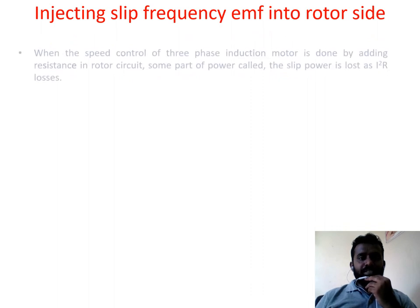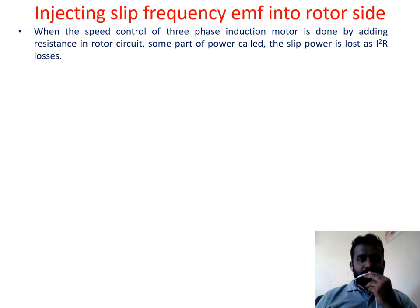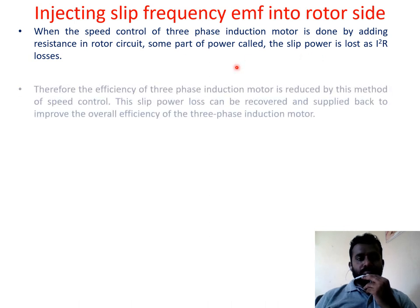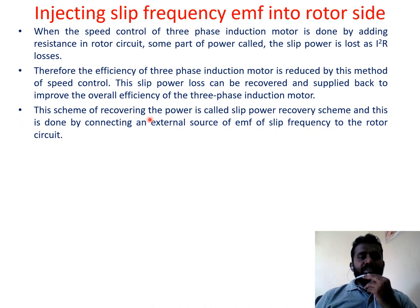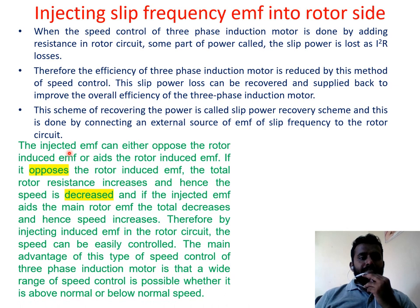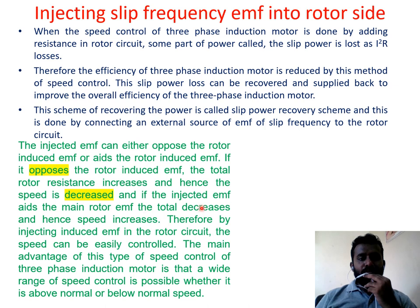Injecting slip frequency EMF into the rotor side: when speed is controlled by adding resistance in the rotor circuit, some power called slip power is lost, reducing motor efficiency. The slip power loss can be recovered and supplied back to improve overall efficiency. This scheme is called the slip power recovery scheme, done by connecting an external source of EMF of slip frequency to the rotor circuit. If the injected EMF opposes the rotor, speed decreases; if it aids the rotor, speed increases.